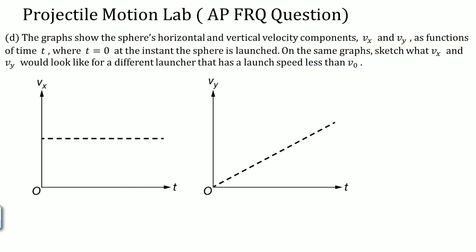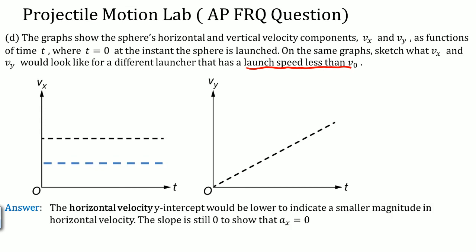The last part here is when they ask you now, they want to change the scenario so that it has a different launch speed that is less than the original v₀. So it's asking, how do these graphs change now that your velocity that you use is less?